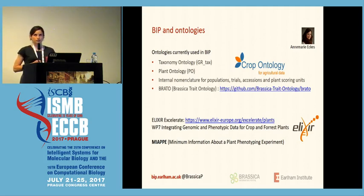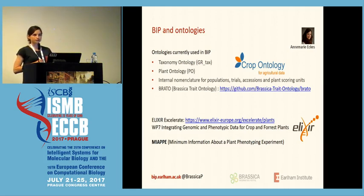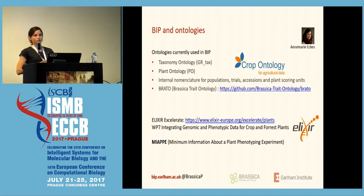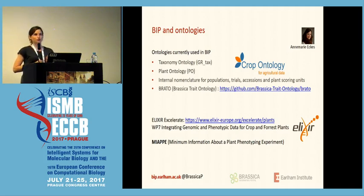Brassica is a very diverse species — basically from rapeseed and rocket to cabbage and broccoli — so the phenotypes are very diverse. How do you describe this in the best reusable way? For that, we had to come up with our own ontology, and that is BRATO. If you want to contribute, it's also on GitHub. Luckily there's the crop ontology, which we use so we don't have to figure out what to describe, but only how to describe it, because they've come up with a pretty good structure already.